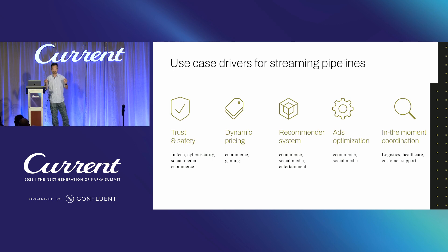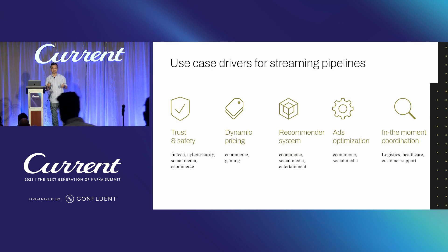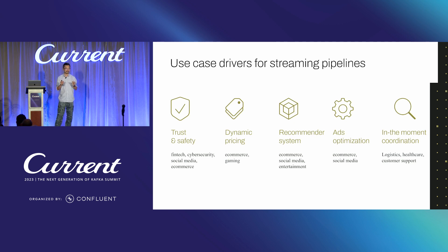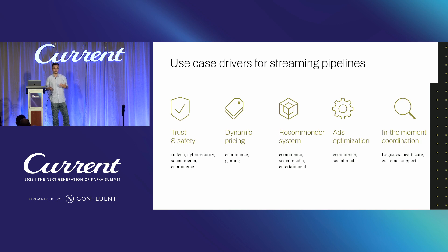The reason I'm bringing up these three different scenarios is because there's a common pattern here. It doesn't matter if it's driven by a machine learning algorithm to give you a recommendation decision, or it's a human driving the customer support decision. The common pattern is: if you don't have timely, relevant information feeding into the model — whether it's a mental model or a machine learning model — it's going to be difficult to make a decision. So that's what we're going to be focusing on today: why streaming pipelines are driving a lot of these machine learning use cases, and the opportunity for optimizations.